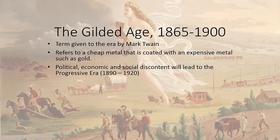The reaction to that over-consumption, the conspicuous consumption, is going to have political, economic, and social repercussions. The discontent will lead to the Progressive Era, which is one of the first things we'll talk about in the next unit, period 7.